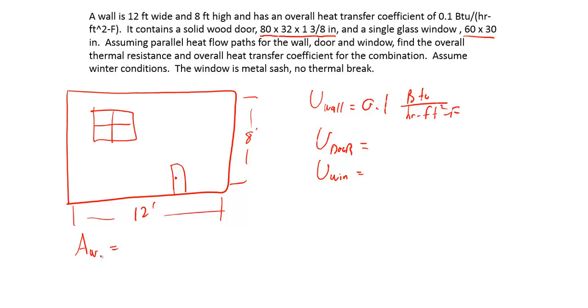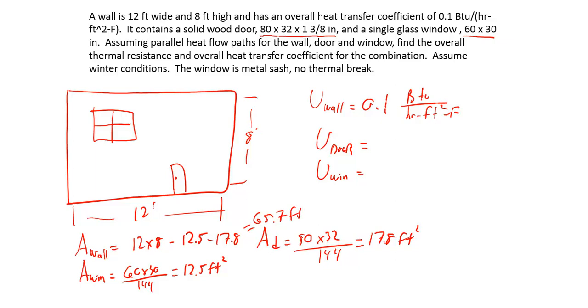We have the area of the wall. It's going to be that 12 by 8 to subtract out the area of the window, which is a 60 by 30 inch window, which equates to 12.5 square feet. We subtract that away from the wall, and we can also get the overall area of the door, which is 32 by 80 vertical inches or 17.8 square feet. So the wall is about 67 square feet, the window is 12.5, and the door is 17.8.